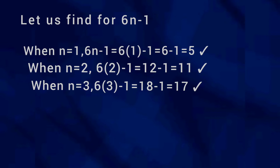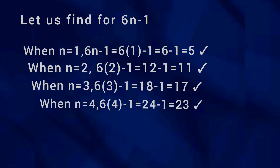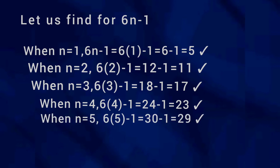When n = 4, 6 × 4 − 1 = 24 − 1 = 23, and 23 is a prime number. When n = 5, 6 × 5 − 1 = 30 − 1 = 29, and 29 is also a prime number.